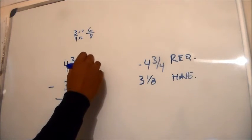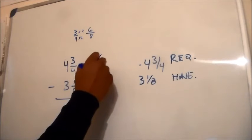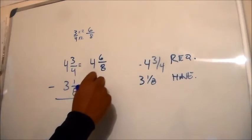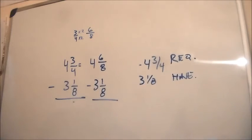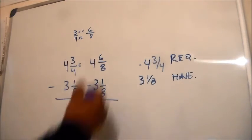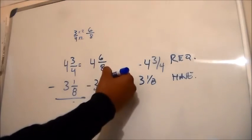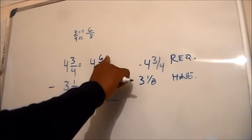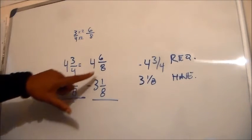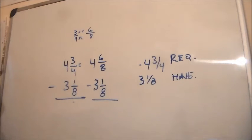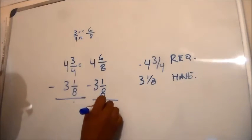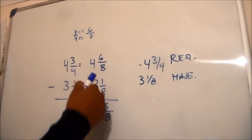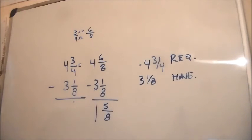So, now our new problem is going to look like four and six eighths minus three and one eighth. And, basically, six minus one. The denominators are not subtracted. The numerators and the whole numbers are, though. Just the idea that says the numerator, the denominator, and the whole number. So, sorry, I got stuff falling all over the place. So, six minus one is going to be five. The denominator is going to come down, and the four minus three is going to be one. And that is our answer, one and five eighths.